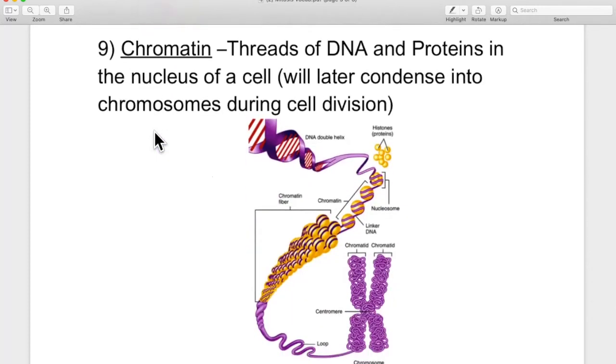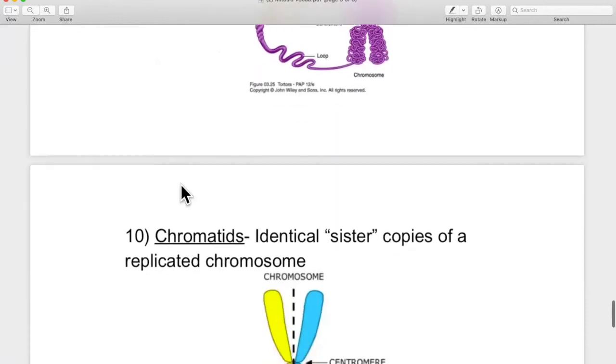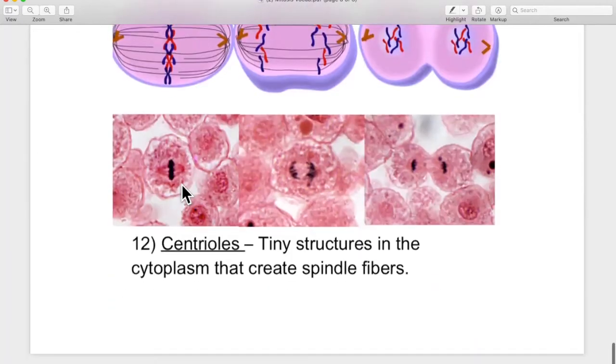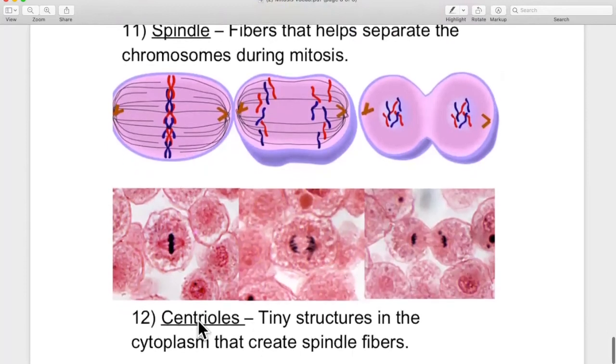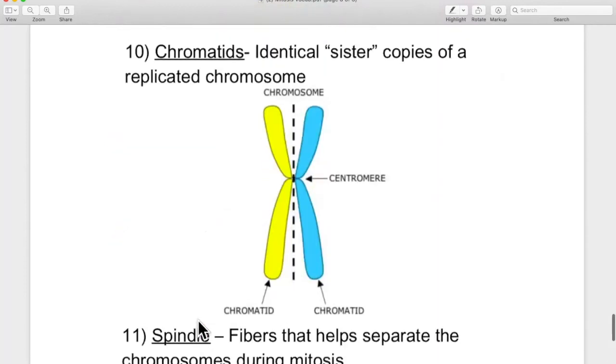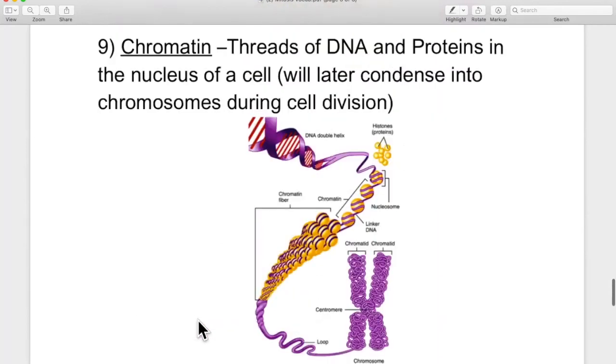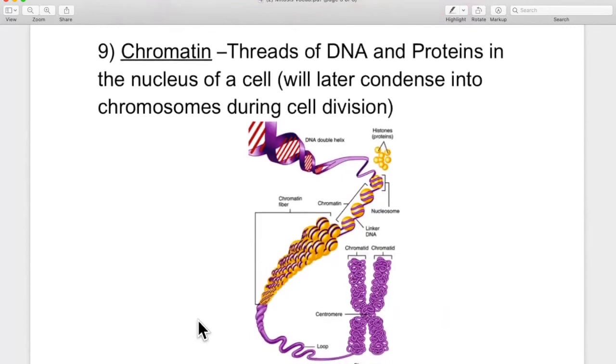Now this is where it gets confusing. Yes, after all of that stuff, guys, this is the confusing part. And that confusion is remembering the words. Number nine is chromatin. Ten is chromatids. And then we also talk about chromosomes and centrioles, another C word. You just got to study it. It's the only way to tell it apart.